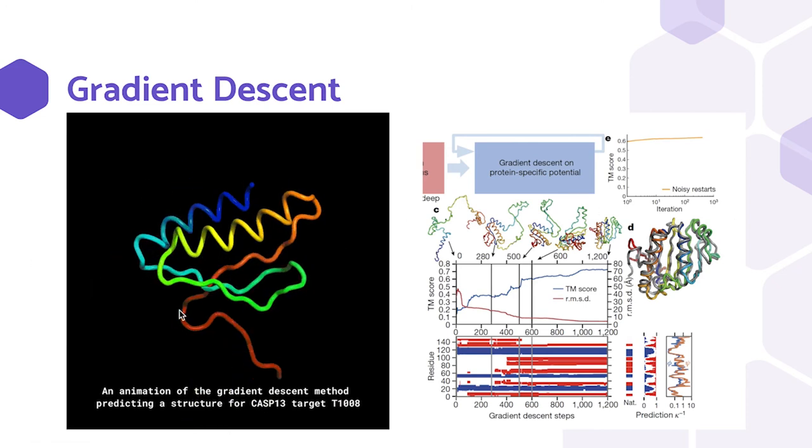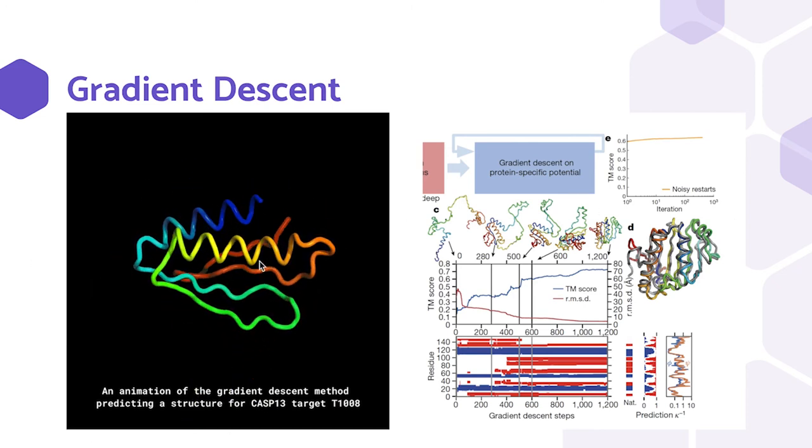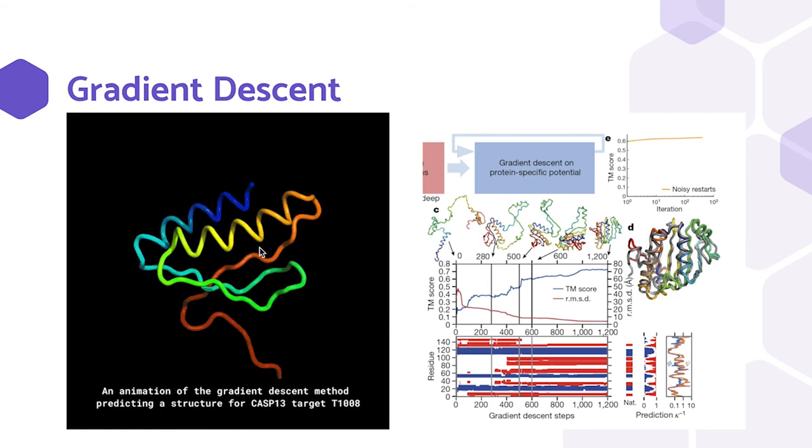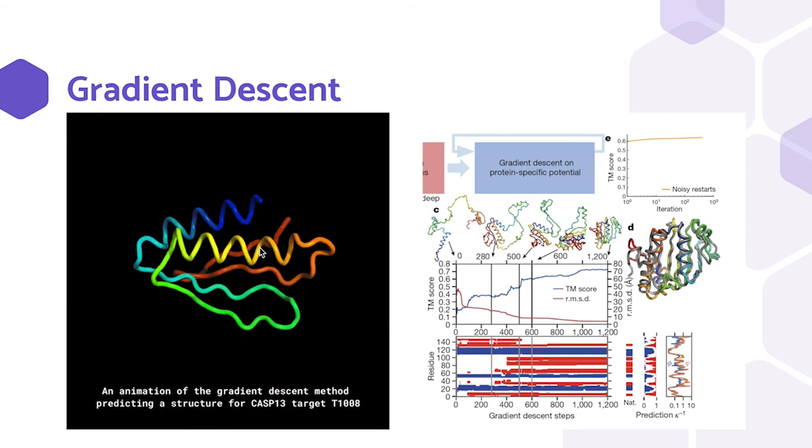You can see that in this image that as the model starts to adjust the weights by learning from thousands of iterations, the prediction becomes a better fit to the ground truth protein.